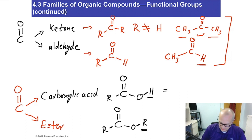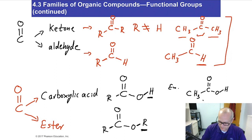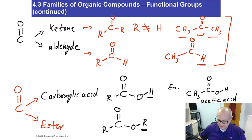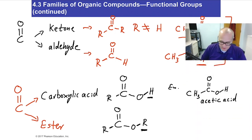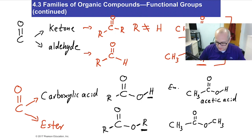Here's an example of a carboxylic acid — acetic acid, the flavoring ingredient of white vinegar. And for an ester, the group bonded to the oxygen is not hydrogen. That's what makes it an ester — the carbon-based group bonded to the oxygen.